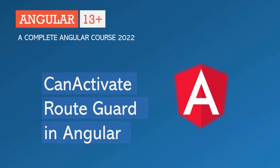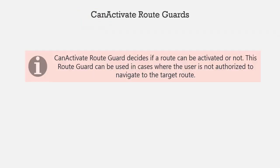In this lecture, you will learn about CanActivate Route Guard in Angular and how to implement it. The CanActivate Route Guard decides if a route can be activated or not based on a given condition. For example, if we have a route which should only be accessed by logged-in users — it should not be accessible to unauthorized users — we can use CanActivate Route Guard. Let's understand this with an example.